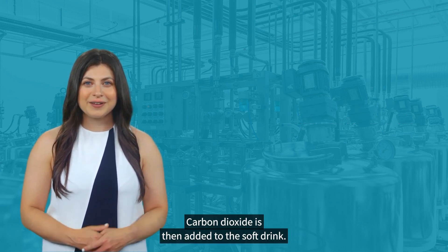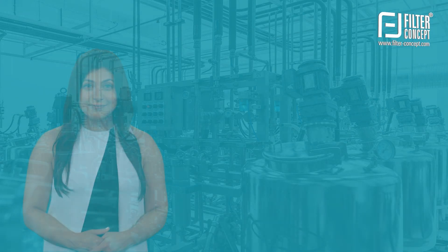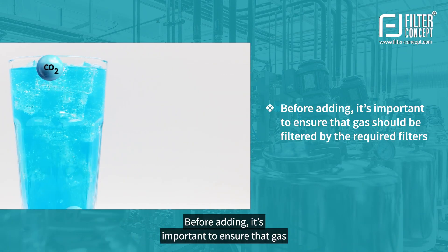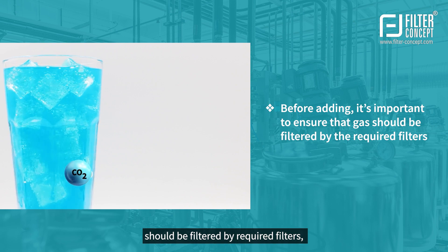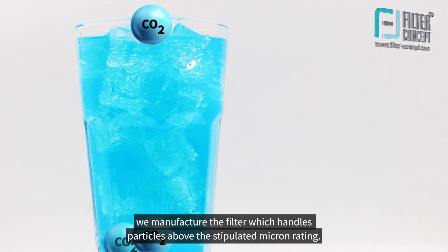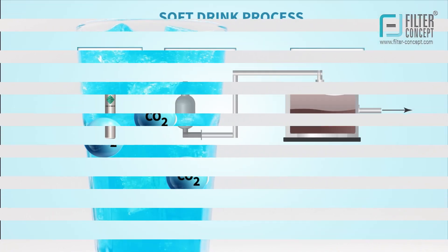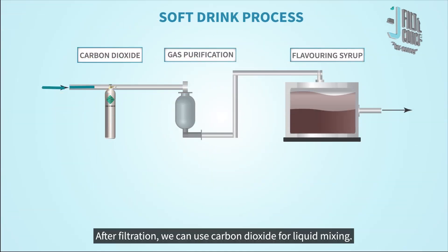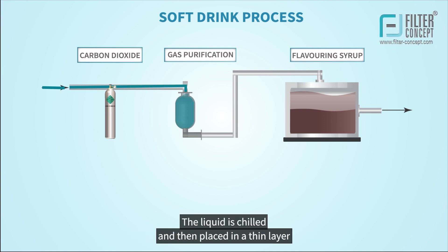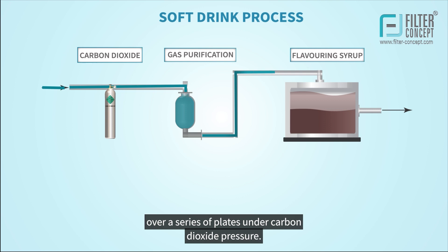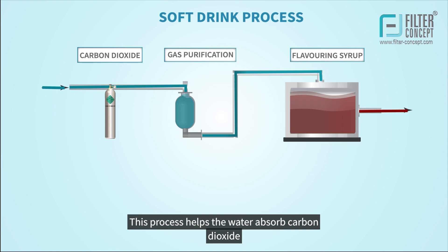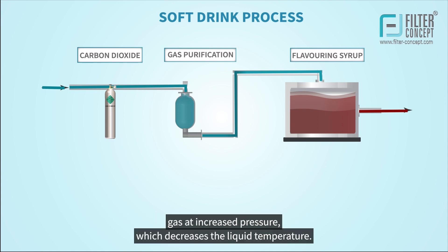Carbon dioxide is then added to the soft drink. Before adding, it's important to ensure that the gas is filtered by the required filters. We manufacture filters which handle particles above the stipulated micron rating. After filtration, carbon dioxide gas is used for liquid mixing. The liquid is chilled and placed in a thin layer over a series of plates under carbon dioxide pressure. This process helps the water absorb carbon dioxide gas at increased pressure, which decreases the liquid temperature.